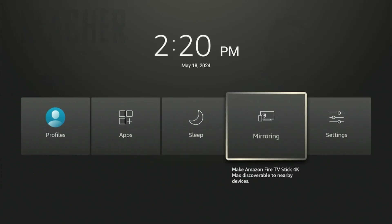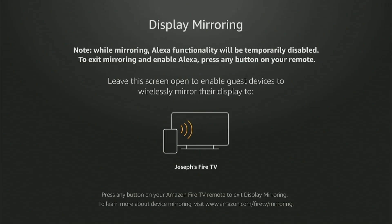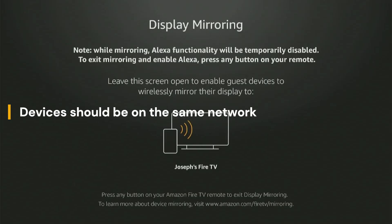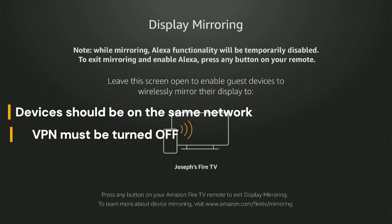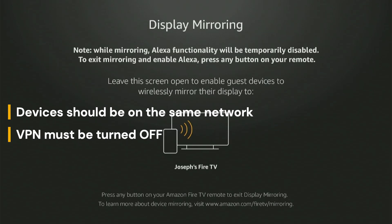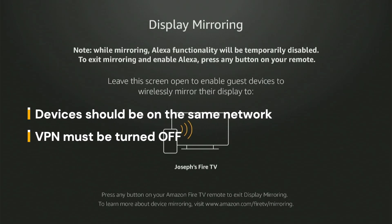For the Mirroring option, keep two things in mind. Your mobile and FireStick should be on the same network, and the VPN should not be connected on either the FireStick or the mobile phone.